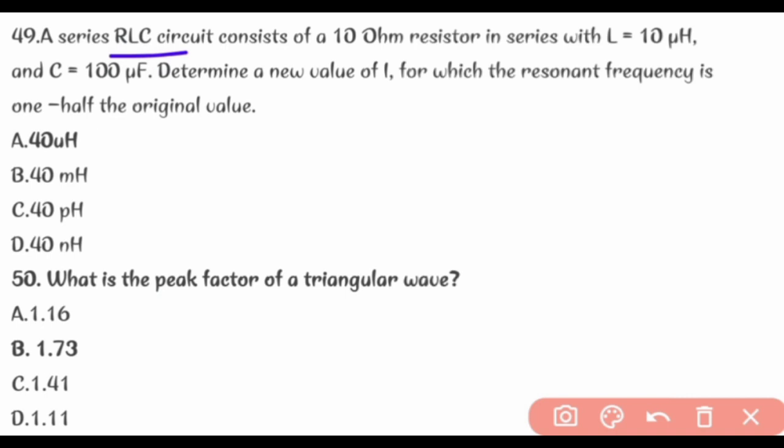A series RLC circuit consists of a 10 Ohm resistor in series with L equal to 10 uH and C equal to 100 uF. Determine the new value of L for which the resonant frequency is one half the original value. Answer: 40 uH.